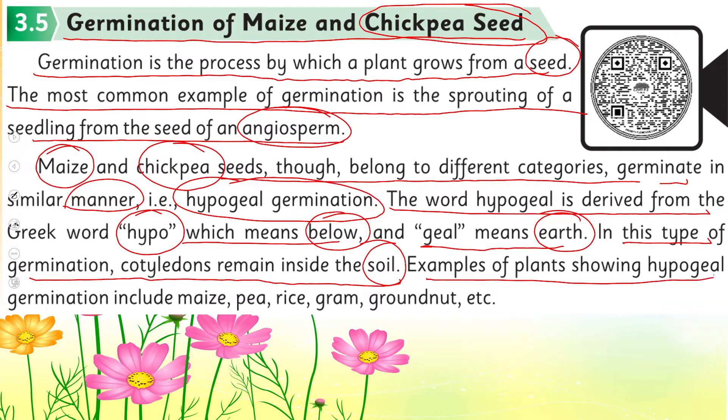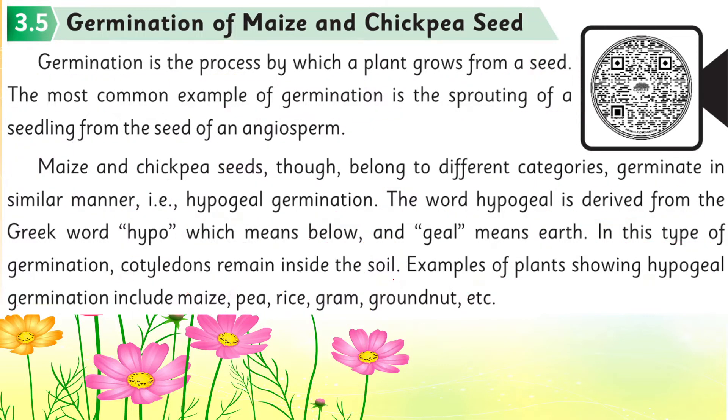Examples of plants showing hypogeal germination include maize, pea, rice, gram, and groundnut.